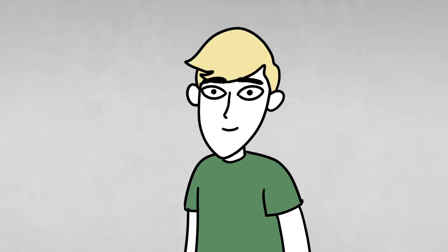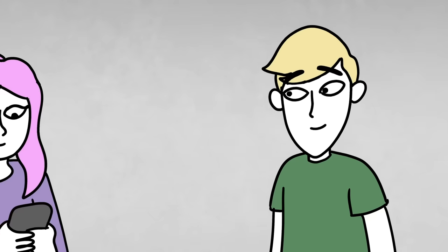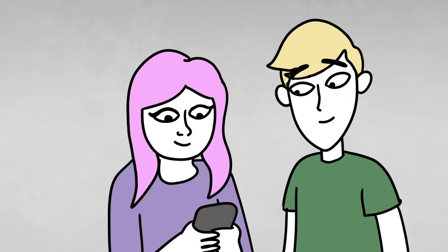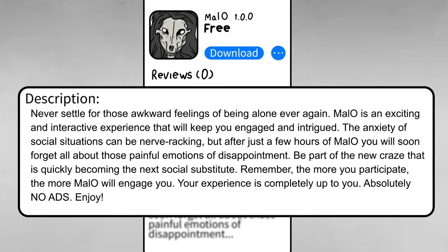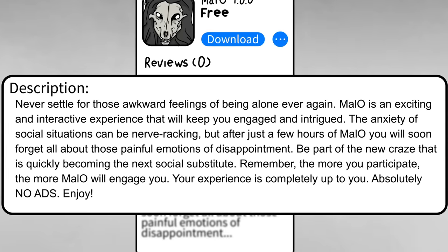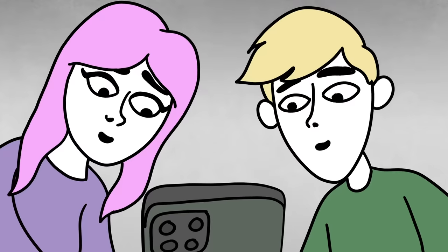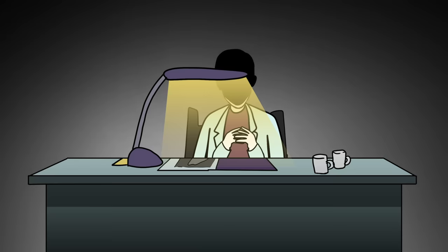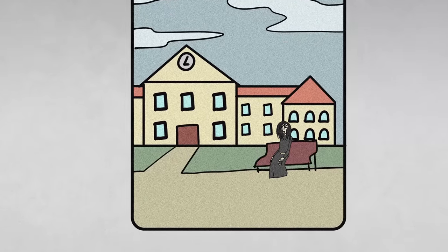Such was the case with a subject named William. William had first been exposed to SCP-1471 at 15 years old when his sister Sarah showed him an app she had downloaded earlier in the day. The app's description states that you will never have to settle for awkward feelings of being alone ever again, that Mallow is an exciting and interactive experience that will keep you engaged and intrigued, and that after just a few hours of Mallow, you will soon forget all about those painful emotions of disappointment. Neither William nor his sister knew how the app worked, but they assumed it was tracking them using some kind of GPS. And soon, William was receiving images from SCP-1471. The first one he received was of his school's courtyard, with SCP-1471-A barely noticeable, sitting on a bench.